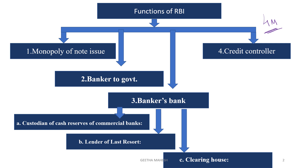You can see here the functions of RBI are divided like this. The first function is monopoly of note issue. Second one is banker to government. Third is banker's bank — performing functions such as custodian of cash reserves of commercial banks, lender of last resort, and clearing house. The fourth one is credit controller. Now let us discuss this in detail.